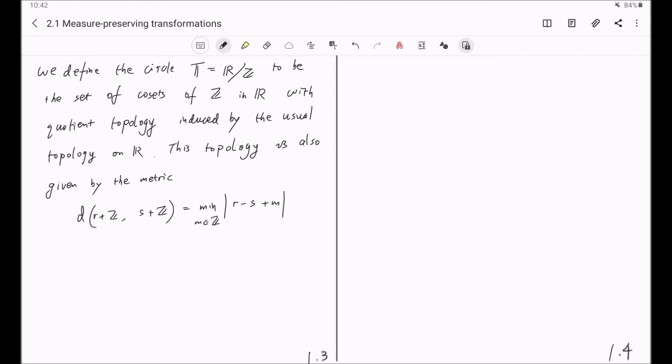This topology makes T into a compact abelian group. Remember, this quotient under the quotient topology is homeomorphic to the circle, and that is why it is a compact group.